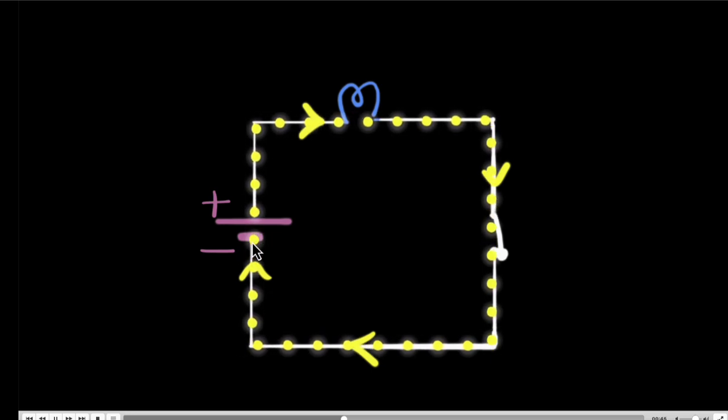So you see electrons are actually being pushed from the negative terminal and being pulled back into the positive. But the direction of the current is from the positive side of the battery to the negative terminal of the battery.